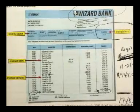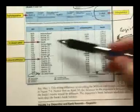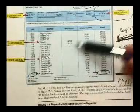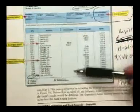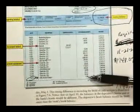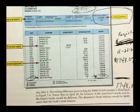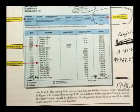Did they deposit the right amount of money? Did they withdraw the right amount of money? The only way we're going to be able to do that is go through all the individual transactions on the bank statement and check them against our records. That's what we mean by reconciling a bank statement.